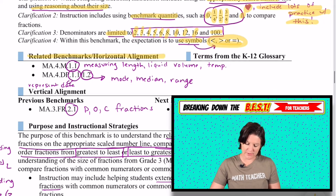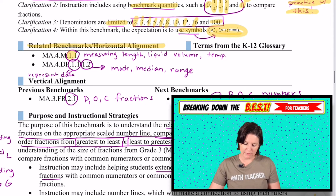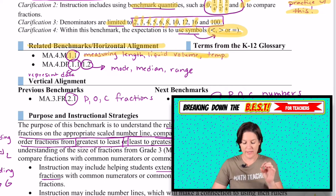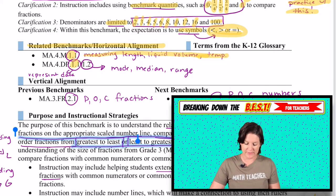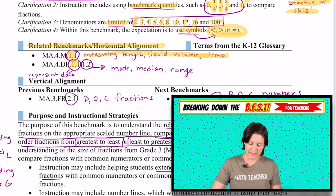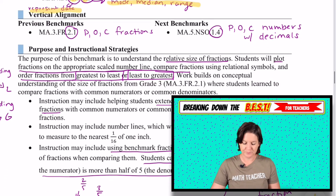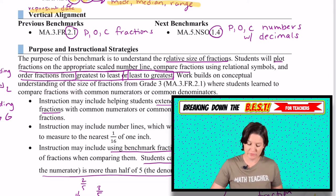Some related benchmarks would be MA.4.M.1.1, measuring length and liquid volume, and temperature. This definitely comes into play because when we get to that standard, it does incorporate fractional use. We also have this data analysis and probability where we're representing data for 1.1, and 1.2 is practicing with mode, median, and range.